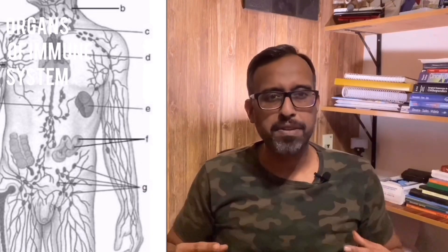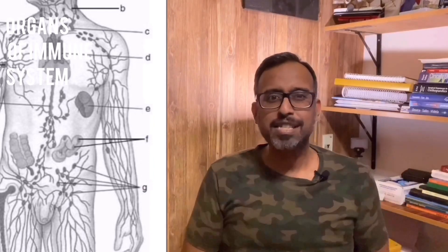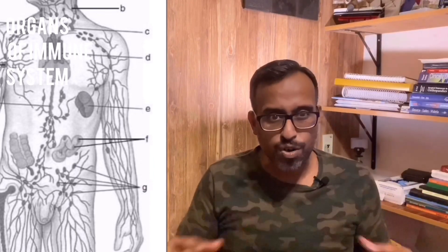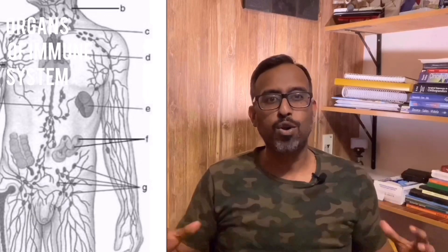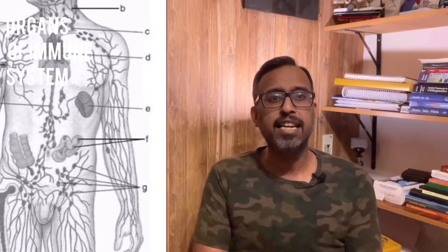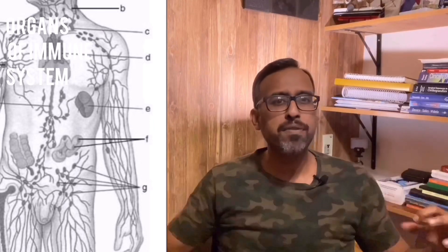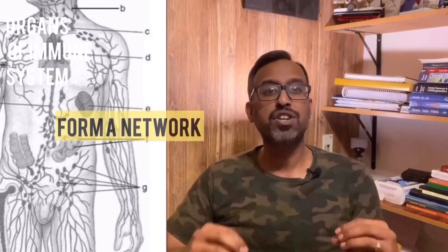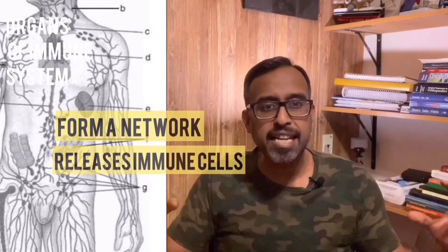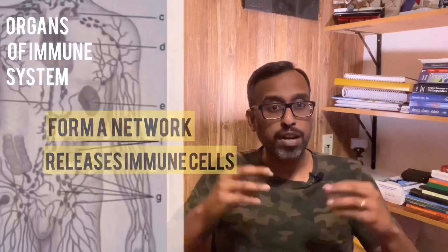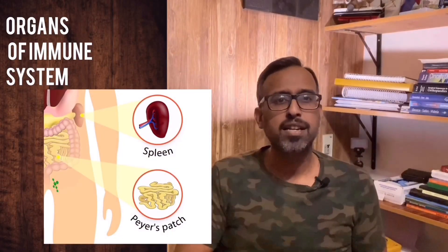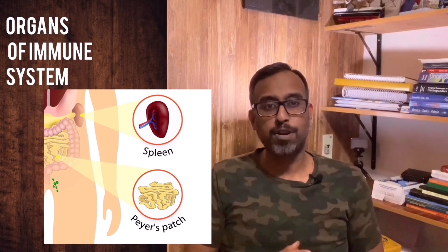Then there is the spleen, the bone marrow — the stuff inside your long bones — and the lymph nodes, a very important component of the immune system. We have lymph nodes everywhere: in the throat, behind the collarbone, under the armpits, and inside the groin. You can see an image of a hundred-year-old drawing showing how lymph nodes are distributed all over the body. The stomach also has glands called Peyer's patches which play an important role in immunity, protecting from gastrointestinal infections.